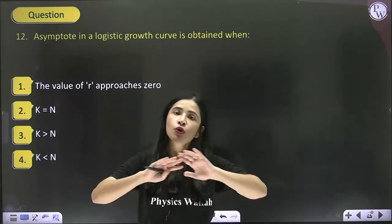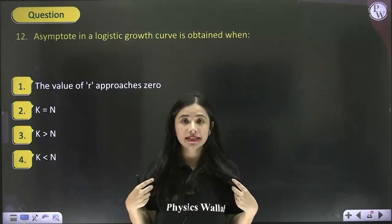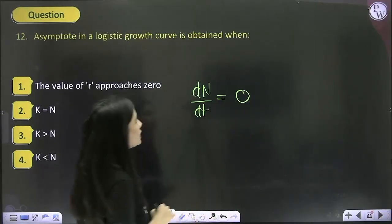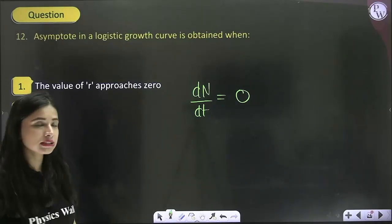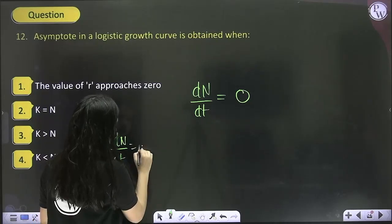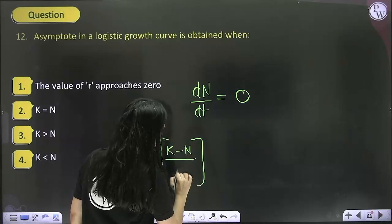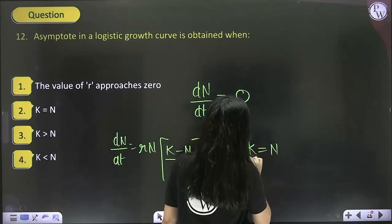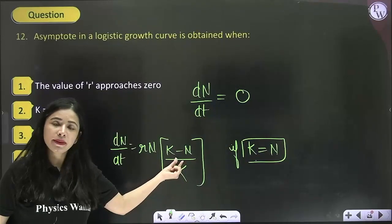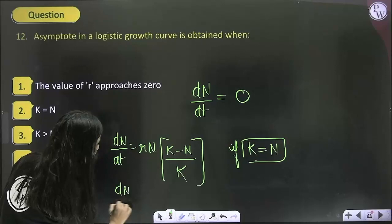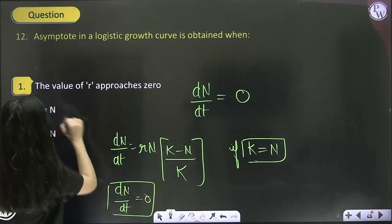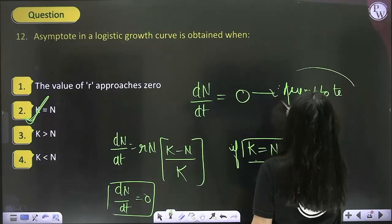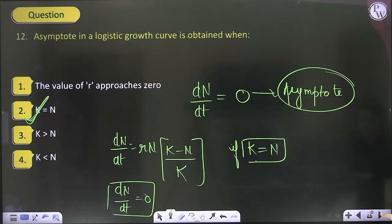Asymptote means no further growth — when the graph becomes constant, that situation is called asymptote. At asymptote, dN/dt should be equal to 0. In the logistic growth curve, the equation is: dN/dt = rN(K − N)/K. Now, if the K value becomes equal to N, then K minus N becomes 0, and anything multiplied by 0 is 0. That 0 is the asymptote — meaning no further growth.